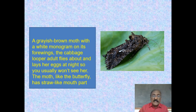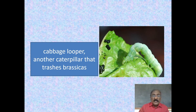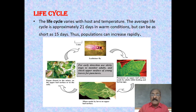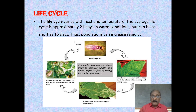You usually won't see the adult moth, as it is active at night. The moth, like the butterfly, has a straw-like mouthpart. Here you can see the cabbage looper, another caterpillar that damages the brassica family. This slide shows the life cycle of the insect. The average life cycle is approximately 21 days in warm conditions but can be as short as 15 days, so populations can increase rapidly within a short span of time, deteriorating agricultural crops.